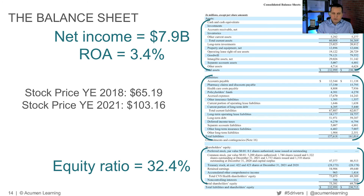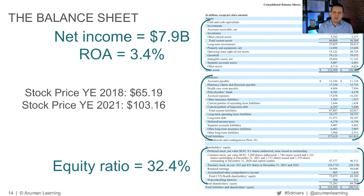So remember, there are a couple of things we're looking for on the balance sheet. One is the structure: assets equal liabilities plus equity. Two, we're measuring financial strength — one way to do that is through the equity ratio. And three, we want to make sure we're getting a decent return, and that's where we use ROA. We try to balance those out depending on how we look at the business, how we're reading the market, and our own personal preferences. And that is the balance sheet.